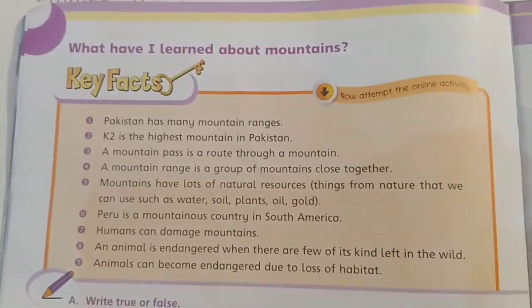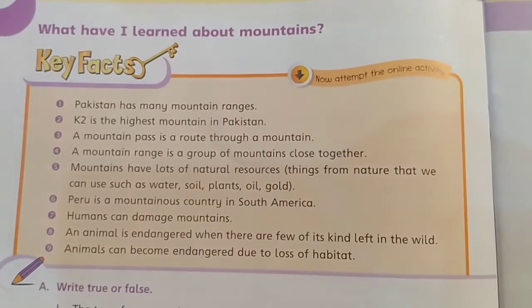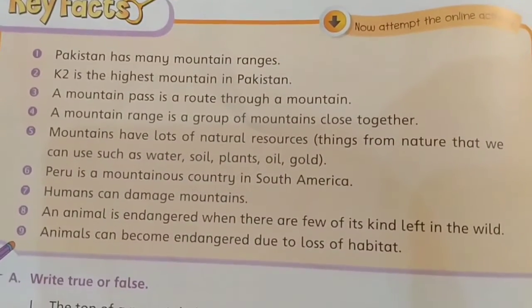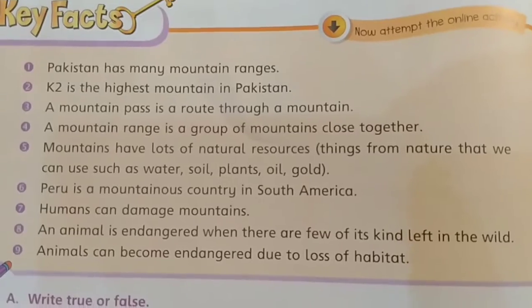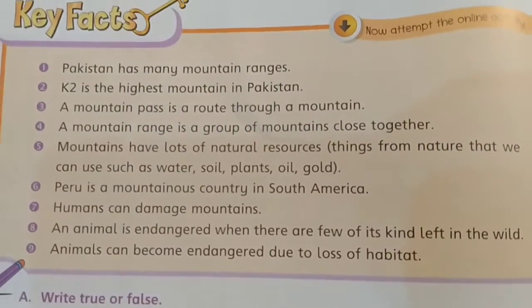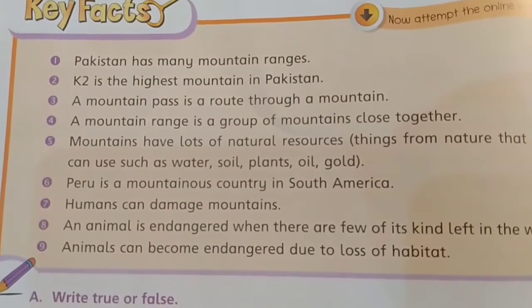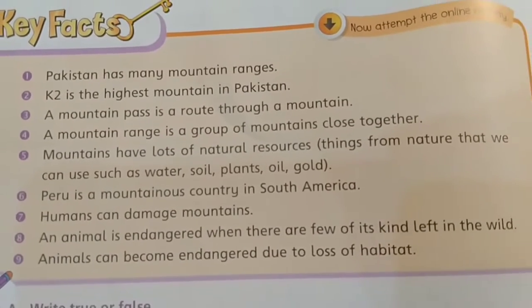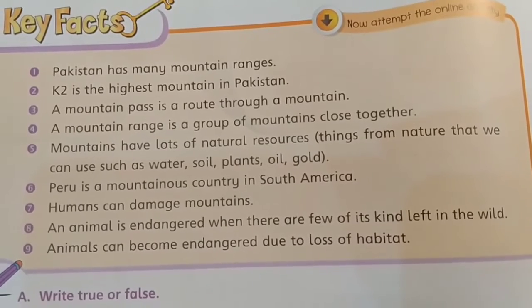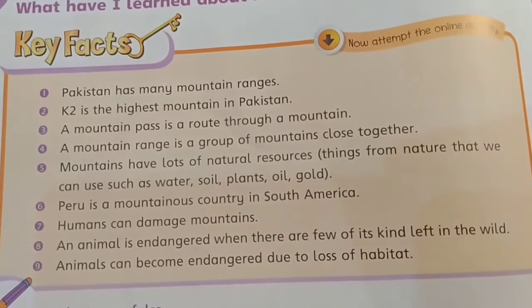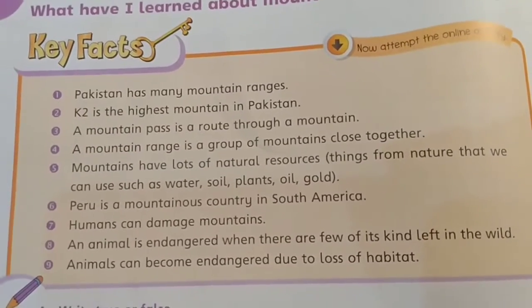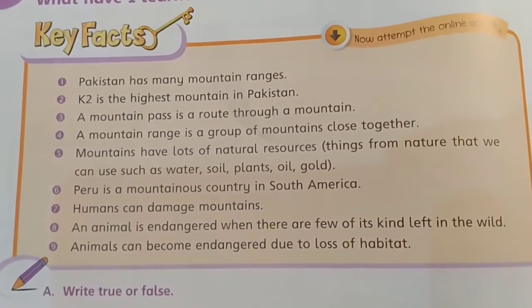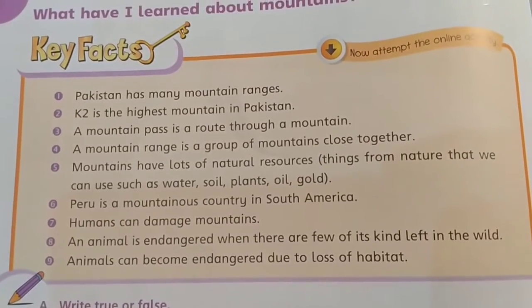We are almost at the end of this chapter, so we will summarize. Key facts: Pakistan has many mountain ranges; K2 is the highest mountain in Pakistan; a mountain pass is a route through a mountain; a mountain range is a group of mountains close together; mountains have lots of natural resources such as water, soil, plants, oil, and gold; Peru is a mountainous country in South America; humans can damage mountains; an animal is endangered when there are few of its kind left in the wild; animals can become endangered due to loss of habitat.